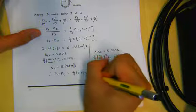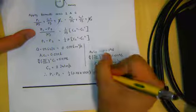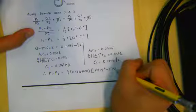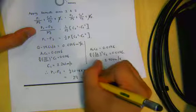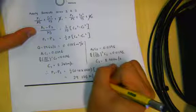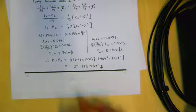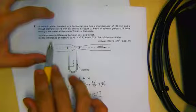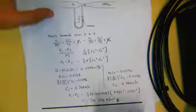Therefore P1 minus P2 equals half times the density of petrol times (C2 squared minus C1 squared). The density of petrol is specific gravity 0.78 multiplied by 1000, giving 780 kg/m³. With C2 equal to 8.964 and C1 equal to 2.241, we get P1 minus P2 equals 29,376 Newtons per meter squared, or Pascals.